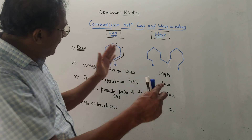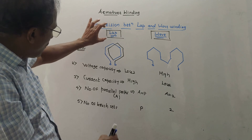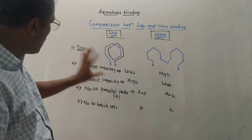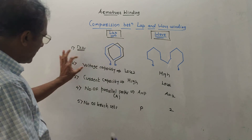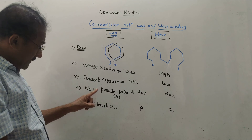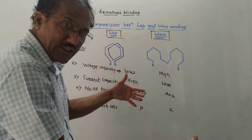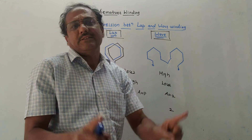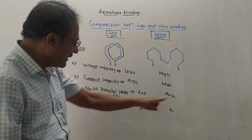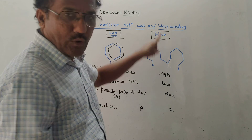A comparison can be asked. I have drawn a table for comparison purpose with lap winding and wave winding. Voltage capacity for lap winding is low; for wave winding it is high. Current capacity is opposite — high and low respectively. Number of parallel paths is denoted by A. For lap winding, A equals P (number of poles). For wave winding, A equals 2. Number of brush shapes equals P for lap winding and equals 2 for wave winding.